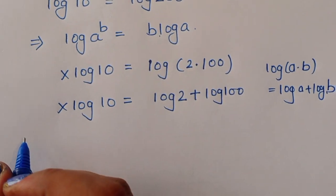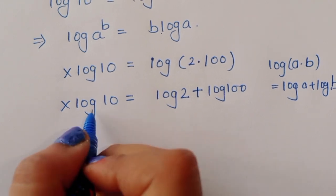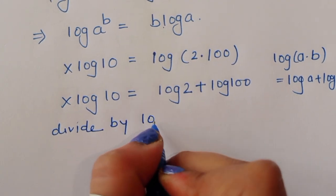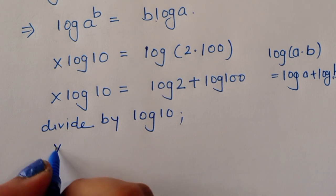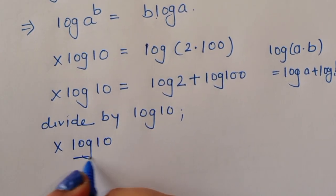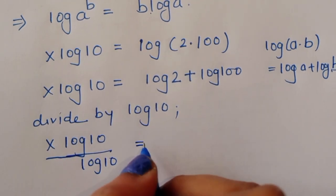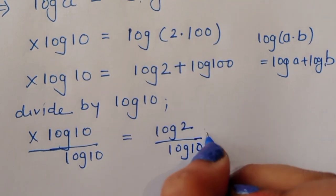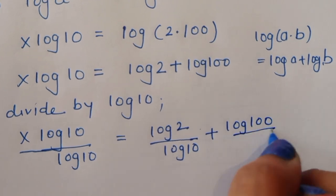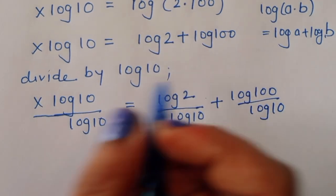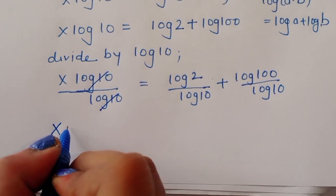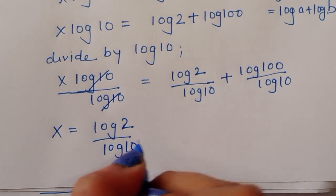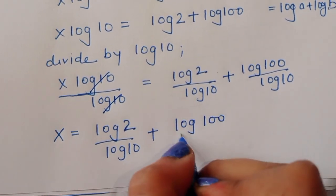To find the value of x, we divide both sides by log 10. Then x times log 10 divided by log 10 equals log of 2 divided by log of 10 plus log of 100 divided by log of 10. Log 10 cancels, so x equals log of 2 divided by log of 10 plus log of 100 divided by log of 10.